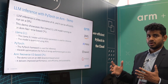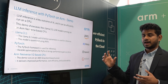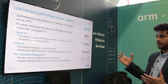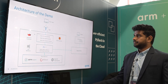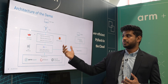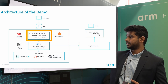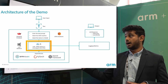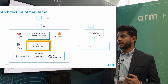LLM inference with PyTorch on ARM — we are doing on-CPU inference. This demo runs the Meta Llama 3.1 8 billion parameter model with PyTorch on the ARM Neoverse V2 CPU, which is available as Graviton 4 on Amazon Cloud. The user is able to enter input through the Streamlit front-end running on AWS Graviton 4, with Meta Llama 3.1 on ARM-based CPU as the LLM back-end, doing token streaming to the front-end.